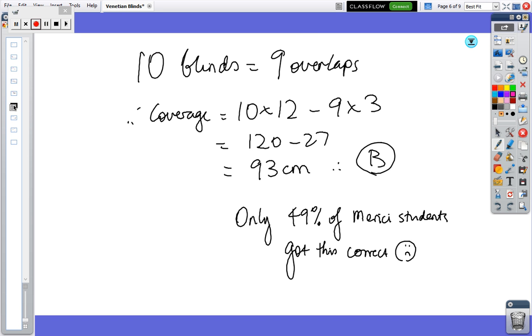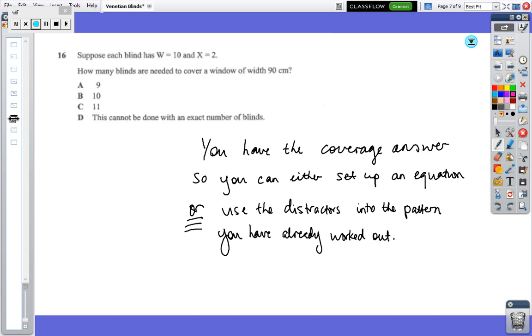Okay. So we're looking at 10 blinds. If you have 10 blinds, you have 9 overlaps. So again, this is a lot easier than the previous question. So 10 overlaps, 10 blinds is 10 times 12. 9 overlaps is 9 times 3. You end up with 93 centimeters, which is B. And again, this is an indication that, you know, the kids weren't perhaps even having a go at it when only 49 per cent of students got this correct. So this was an easy question. Okay. Looking at the next one.